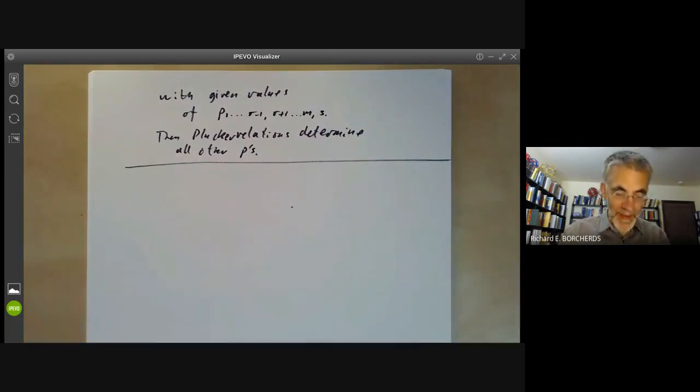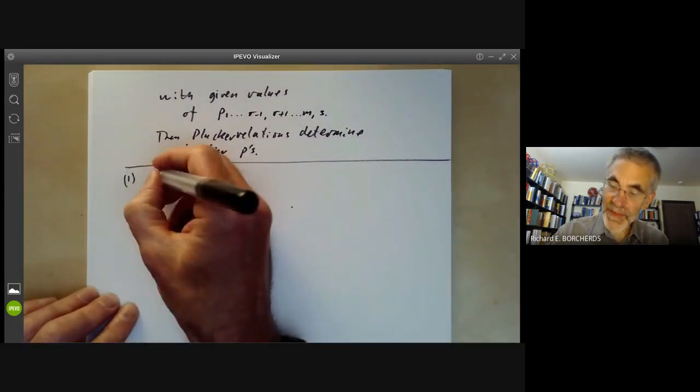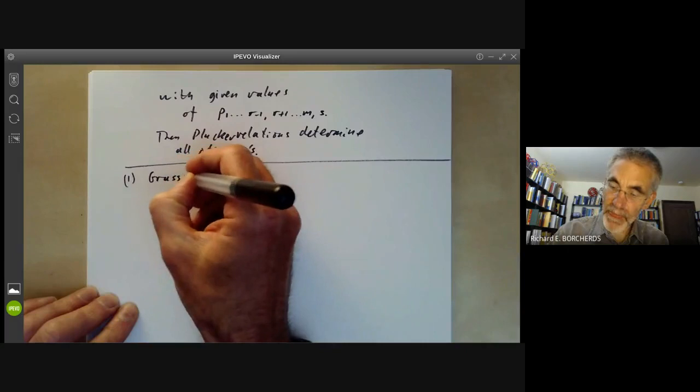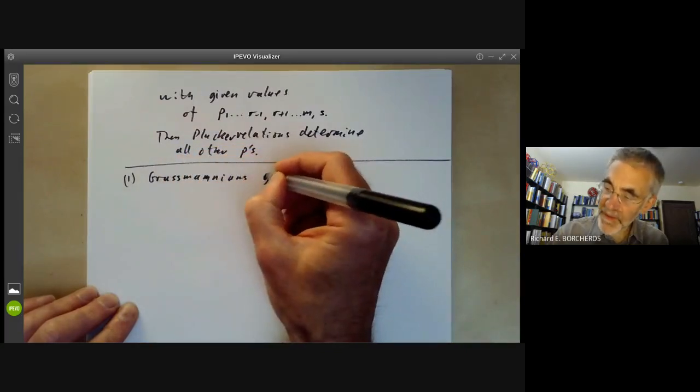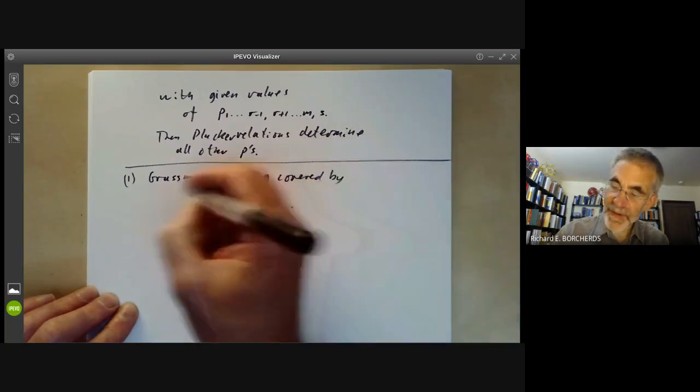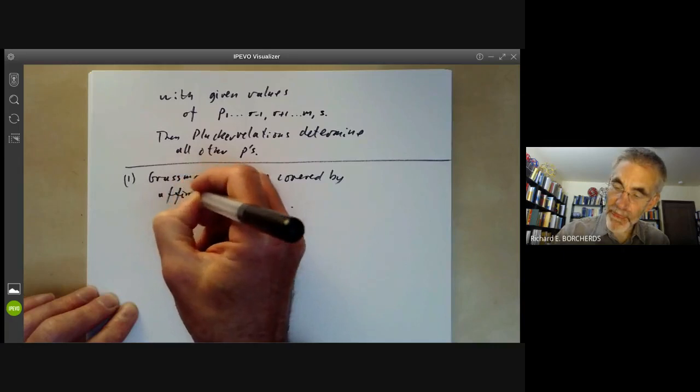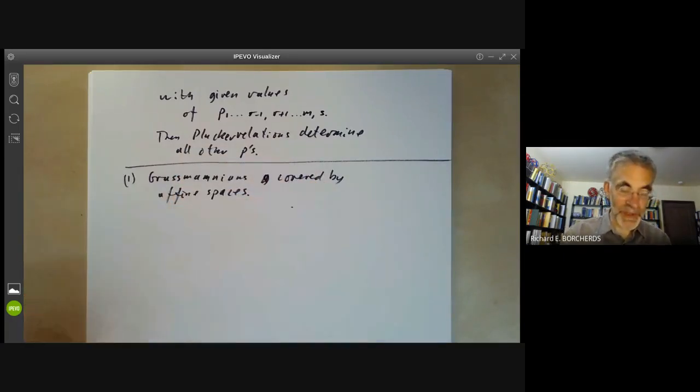So there are several applications of Grassmannians. First of all, Grassmannians have a covering by affine spaces, just as we did for G22. It's very similar.